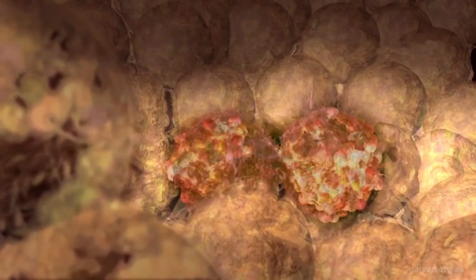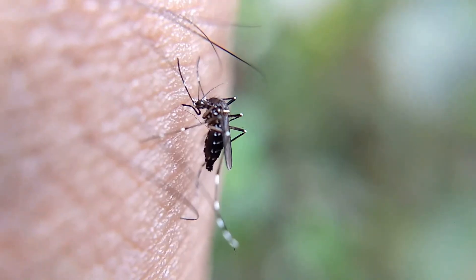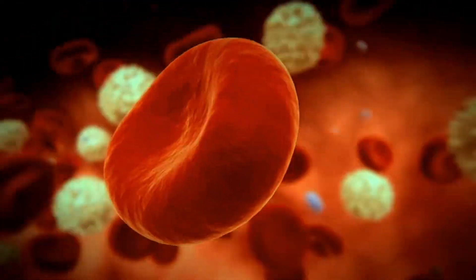Inside a mosquito, it reproduces sexually, growing and developing in the insect's gut. But once passed to a human through a bite, it begins multiplying rapidly, invading blood cells and spreading through the body in waves.